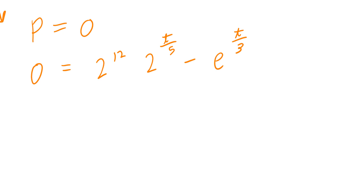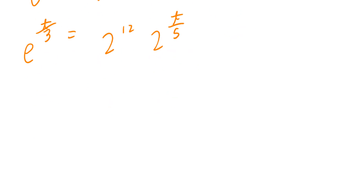Press pause and go through the same technique — use part A as a template to solve for t. Bring negative e to the power of t divided by 3 to the left, making it positive. Divide both sides by 2 to the power of t divided by 5, giving: e to the power of t divided by 3 divided by 2 to the power of t divided by 5, equals 2 to the power of 12.